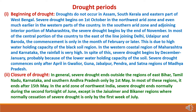Severe drought commences only after April in Gwalior, Guna, Jabalpur, Pendra, and Satna regions of Madhya Pradesh. Regarding closure of drought, in general, severe drought ends outside the regions of East Bihar, Tamil Nadu, Karnataka, and southern Andhra Pradesh only by 1st May. In most of these regions it ends after 15th May. In the arid zone of North-West India, severe drought ends normally during the second fortnight of June, except in the Jaisalmer and Bikaner regions where normally cessation of severe drought is only by the first week of July.